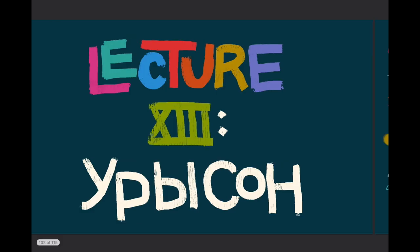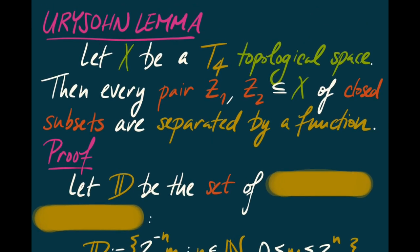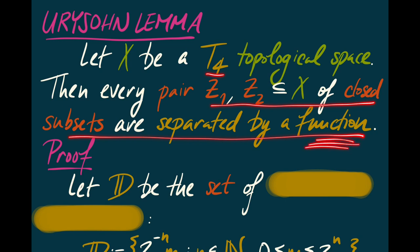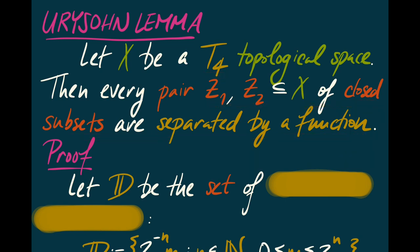Today we're going to talk about the Urysohn Lemma. Recall that the Urysohn Lemma says that if you have a T4 topological space — that means any pair of closed subsets of X can be separated by open neighborhoods — then any pair of disjoint closed subsets can actually be separated by a function. This is a remarkable theorem because X needn't have come from anything involving the real numbers, but the T4 condition can be used to construct a function landing in the real numbers. That transition into the world of real numbers is the key interesting idea.